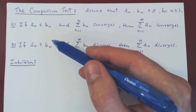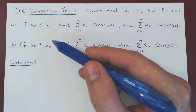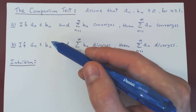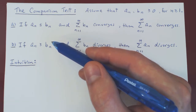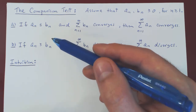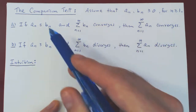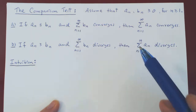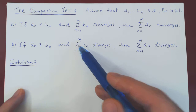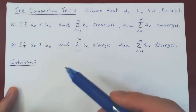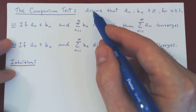You can turn this around: if you have a series of positive terms and you want to show it converges, all you have to show is that it is finite. If you want to show it diverges, all you have to show is that it is infinite. This is the reasoning we'll apply in both cases, which is why we might just as well call this the comparison idea and not the comparison test.